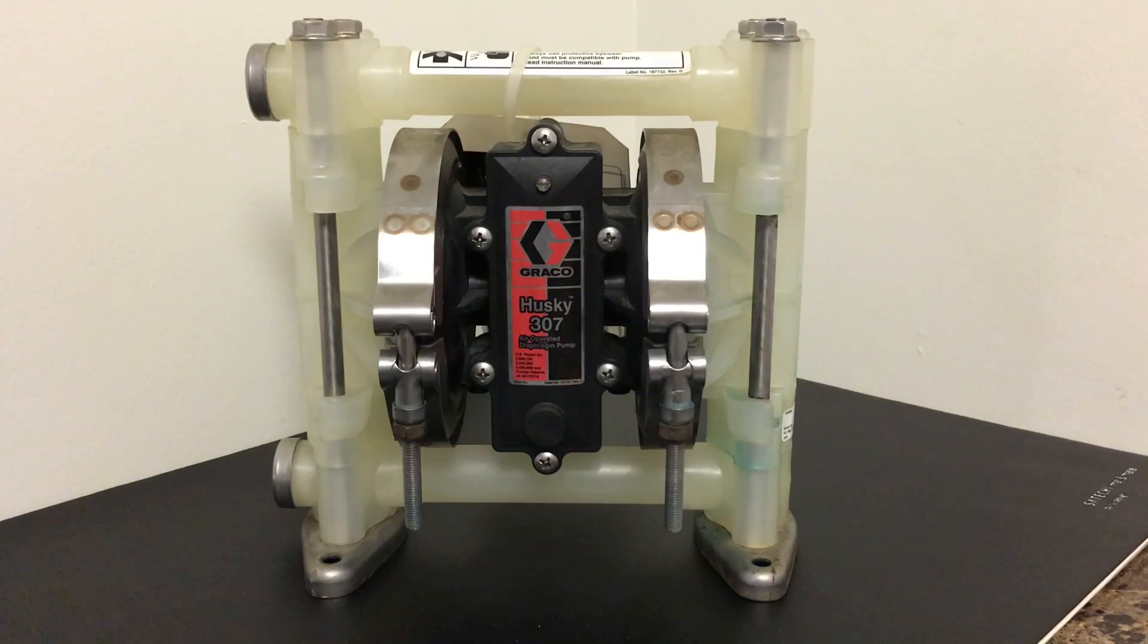But before you go and order the part, take the pump apart, look at it. Look at the diaphragm, look at the seals, see if there's any other issues you need to worry about before ordering the air valve replacement, getting it, installing it, and finding out that there may be other issues with this pump. So that's always a good idea. I'm going to take you step by step how to take it apart, how to put it back together, and hopefully save you guys some time and money.